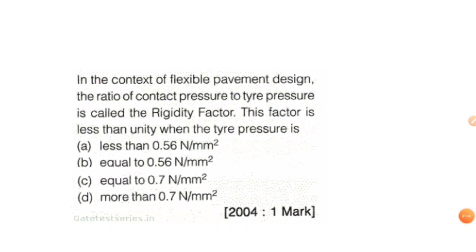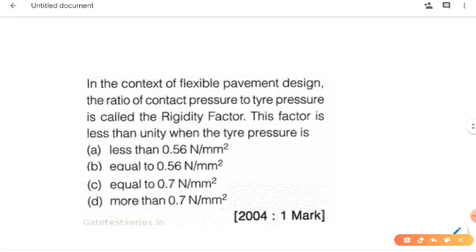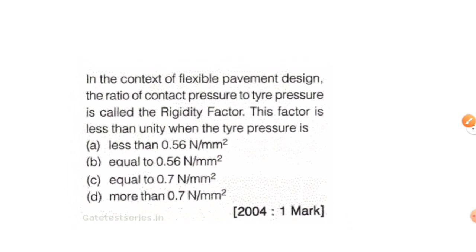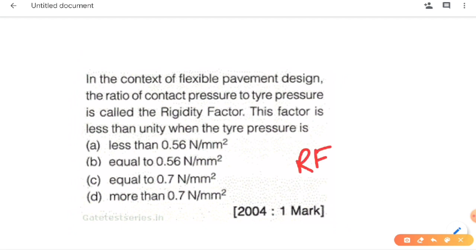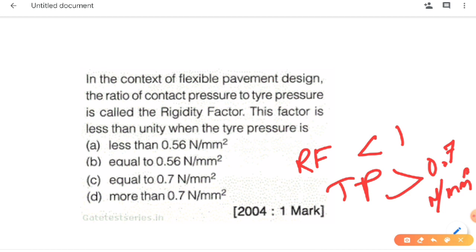Next question: in the context of flexible pavement design, the ratio of contact pressure to tire pressure is called the rigidity factor. This factor is less than unity when the tire pressure is — the answer is when tire pressure is more than 0.7 N/m². So D is our answer. A useful shortcut: if the factor is less than one, then tire pressure is greater.